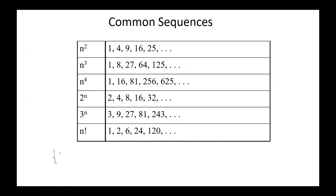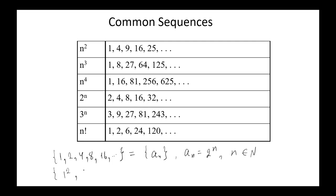Another example: the sequence 1, 2, 4, 8, 16, etc. equals {a_N} where a_N = 2^n, where n belongs to ℕ, the set of natural numbers. And the sequence 1², 2², 3², 4², etc. is the sequence {a_N} where a_N = n², n belongs to ℤ⁺.